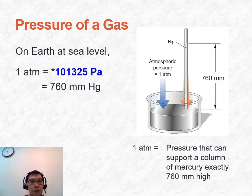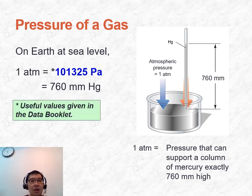The pressure of a gas can be defined using different units. We normally talk about the pressure exerted at sea level, which can be called 1 atm, equal to 101,325 Pascal. Using a very dense liquid called mercury, the pressure exerted by the atmosphere at sea level corresponds to 760 mm of mercury.